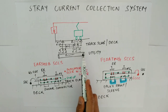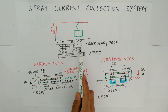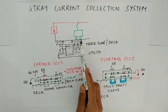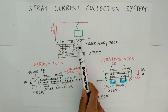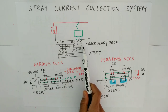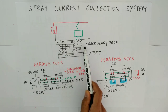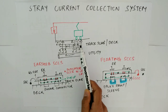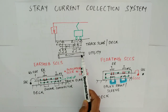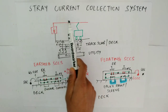What we want is that no corrosion should happen in these utilities. So in order to avoid this, we try to provide some design provisions, which we discussed in lecture 3. Now even after that, if stray current is leaking, then we have to make some design provisions in our system itself so that from our track slab or deck the current does not leak and go to the utilities, or even if it is going then it shall be of very minimal amount. This is the purpose of the stray current collection system.